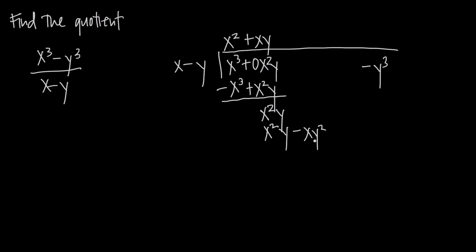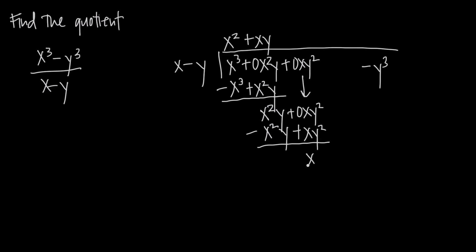We're going to need an xy squared term, so we say plus zero xy squared and bring this down. We want to subtract here, so we change our signs and add. x squared y plus negative x squared y is zero — those cancel. Zero xy squared plus xy squared gives us a single xy squared.